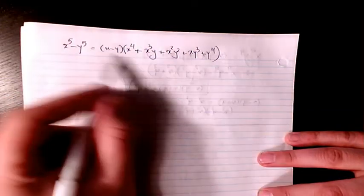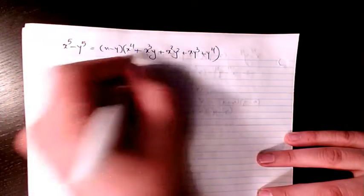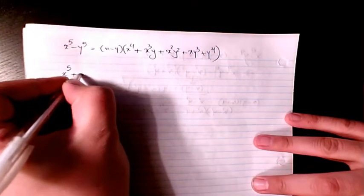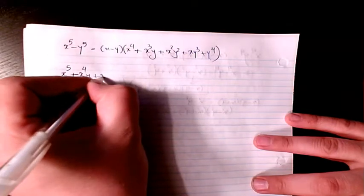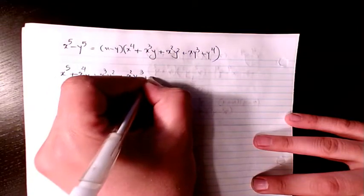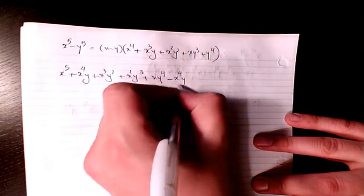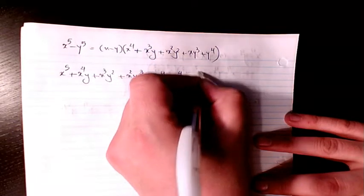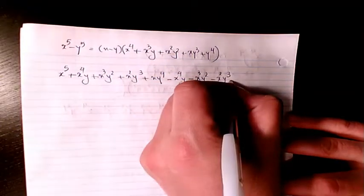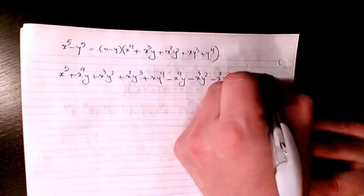So if I want to go from right to left, I just multiply here — x by all these terms and then negative y by all these terms. So it's going to be x to the power of 5 plus x to the power of 4y plus x cubed y squared plus x squared y cubed plus x y to the power of 4, then negative x to the power of 4y, negative x cubed y squared, negative x squared y cubed, negative x y to the power of 4, and negative y to the power of 5.